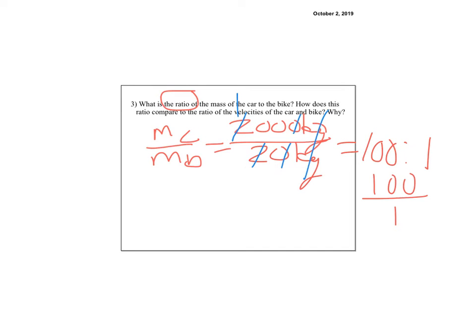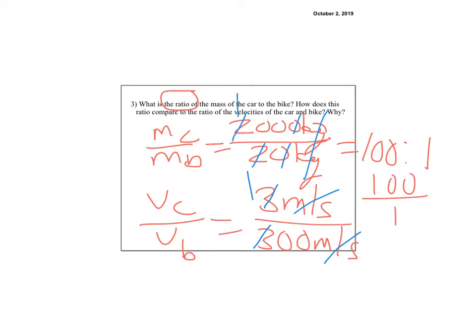And then it asks, what's the ratio of the velocity? So I want to do the velocity of the car. Any predictions? What do you think is going to happen? Is the ratio going to be the same? Is it going to be different? Is it going to be the inverse? Well, let's see. So if we go back to the car, so the car was moving at 3 meters per second, and divided by 300 meters per second. Again, it's a ratio. And so the units cancel. 3 cancels, but then you have a 1 down here too. So it's going to come out to be 1 to 100, or 1 over 100. So it's the inverse of each other.